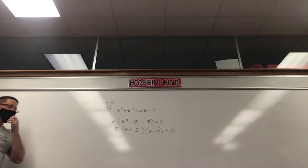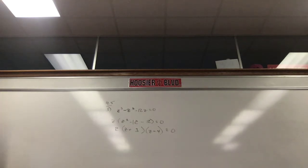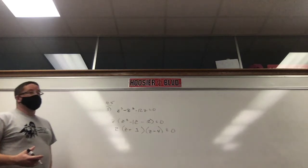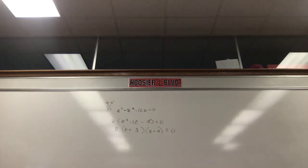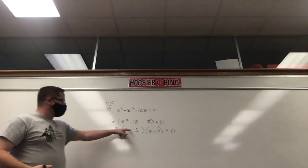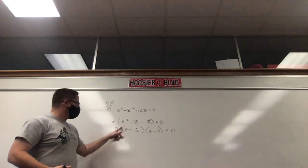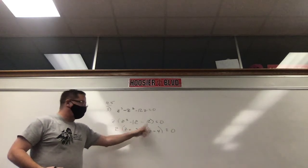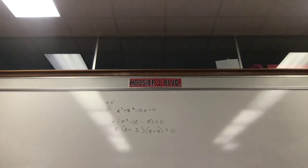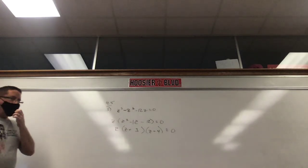Knowing when you're done factoring is probably a tough part of factoring. Does this factor further? Short answer is no — everything is first degree. There's no squares or cubes. Everything's to the first power, so you're done.